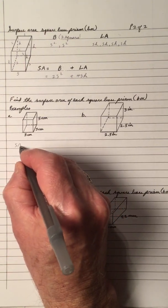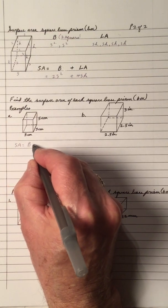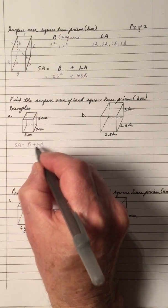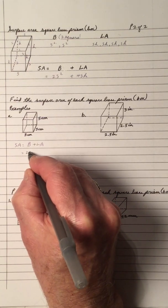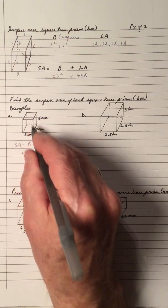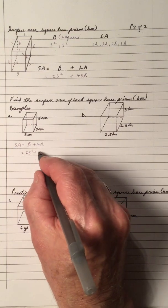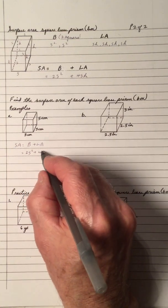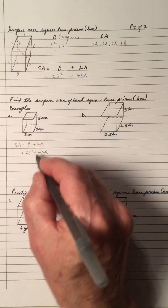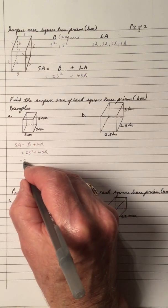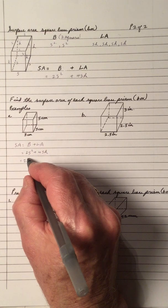So the surface area is the base area plus the lateral area. And the base of the box is a square, but there's two of them, because the top and the bottom is the same. And if we sub in, S is 3.